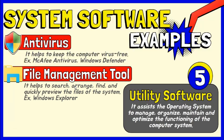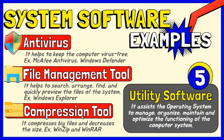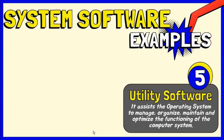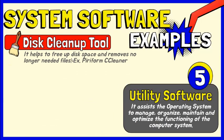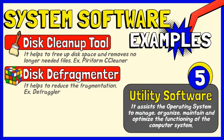The file management tool helps to browse, search, arrange, and quickly preview the files of the system. For example, Windows Explorer is the default file management tool present in the system. Compression tools compress big files and decrease their size; examples are WinZip and WinRAR. Disk Cleanup tool helps to free up disk space; an example is Piriform CCleaner. Disk Defragmenter helps to reduce fragmentation and hence reduces the access speed; Defragler is an example of a disk defragmenter.